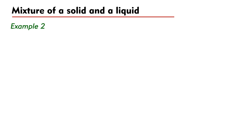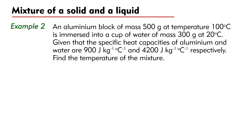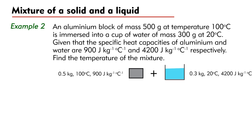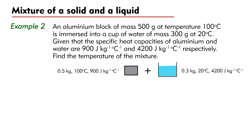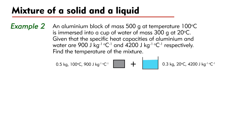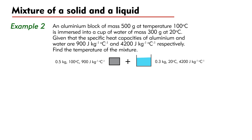Now let's look at the mixture of a solid and a liquid. Example 2: An aluminium block of mass 500 g at temperature 100 degrees Celsius is immersed into a cup of water of mass 300 g at 20 degrees Celsius. Given that the specific heat capacities of aluminium and water are 900 Joules per kilogram per degree Celsius and 4200 Joules per kilogram per degree Celsius respectively, find the temperature of the mixture.